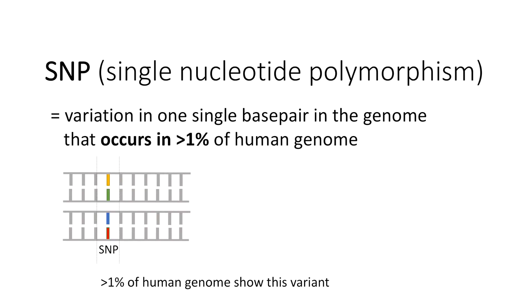Now we talk about an SNP. A single nucleotide polymorphism is a variation in only one single base pair in the genome. But to be called an SNP, it has to occur in at least 1% of the human population.